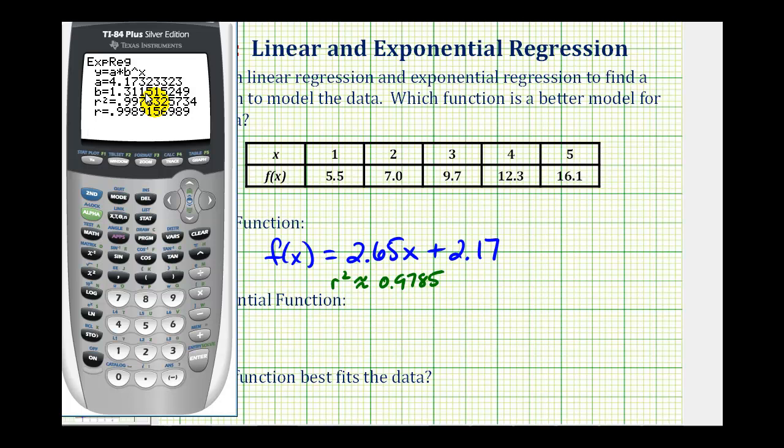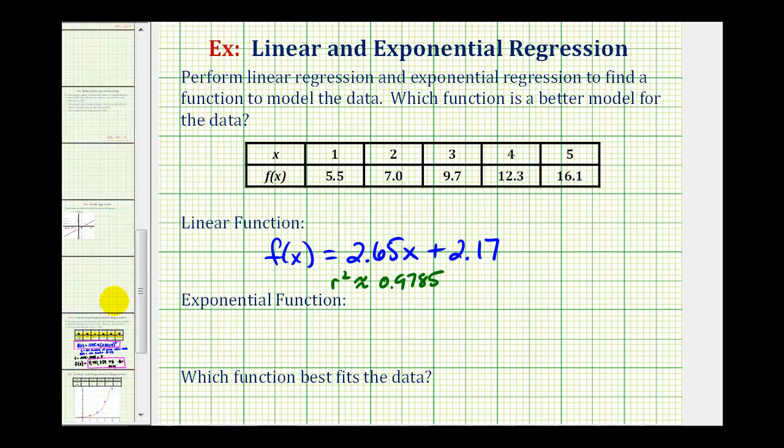For this function we'll round a and b to four decimal places. So the exponential function that we can use to model the data would be f(x) = 4.1732 × 1.3115^x, and r-squared is approximately 0.9978.